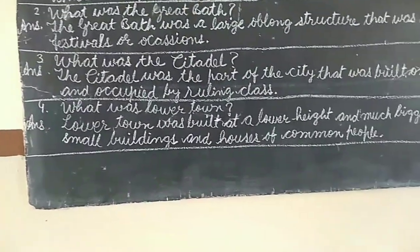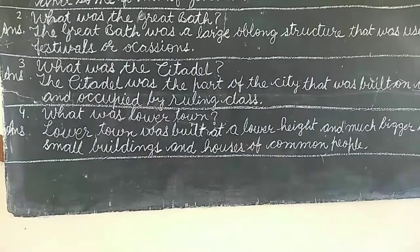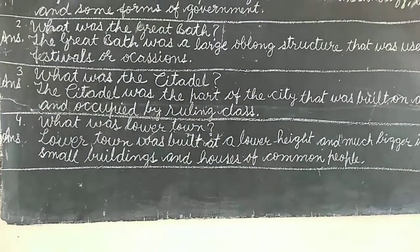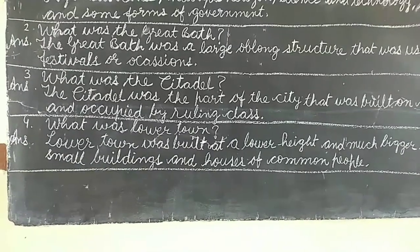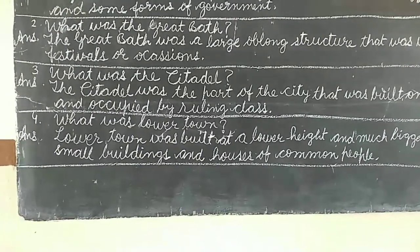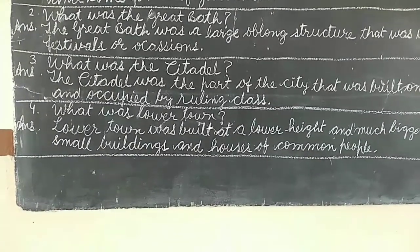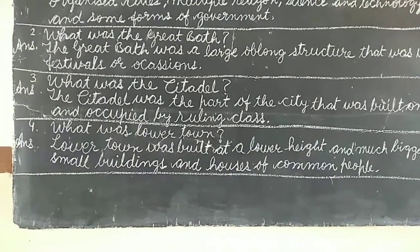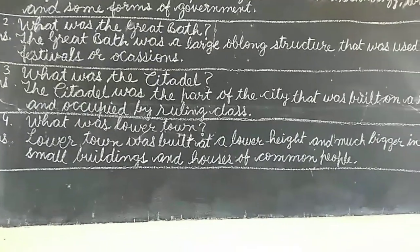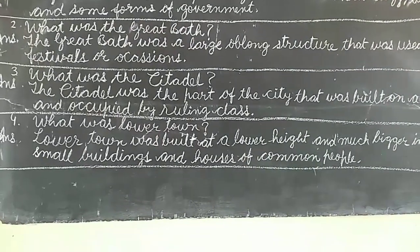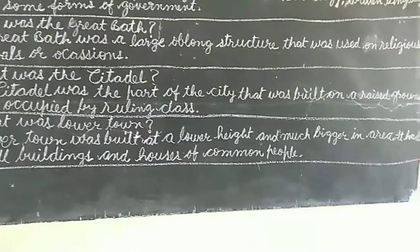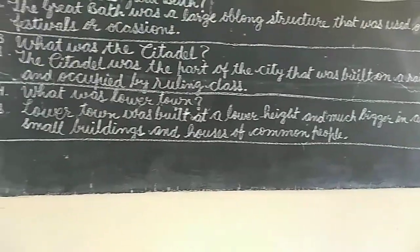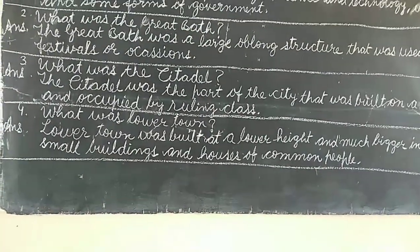Number 4: what was the Lower Town? The city was divided into two parts — the citadel, which was on raised ground, and the Lower Town, which was at a lower height, built in the surrounding area, where the common people's houses and small buildings were built.